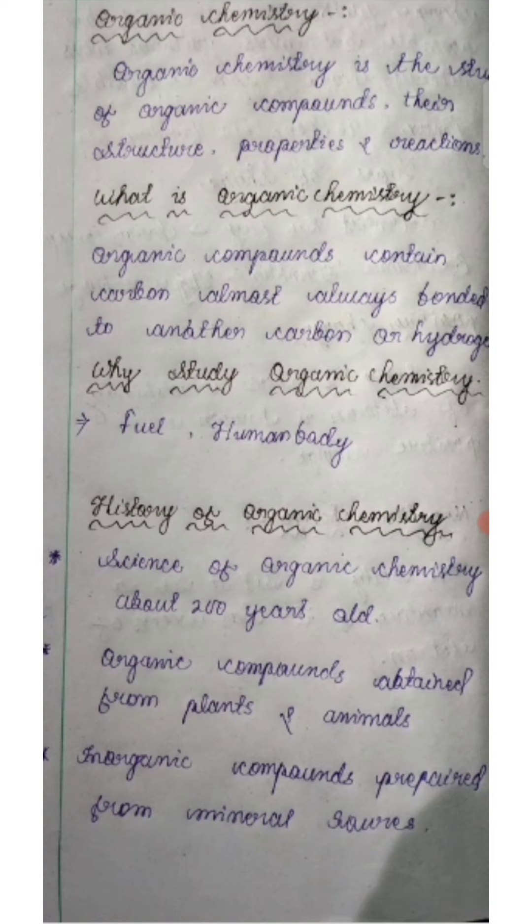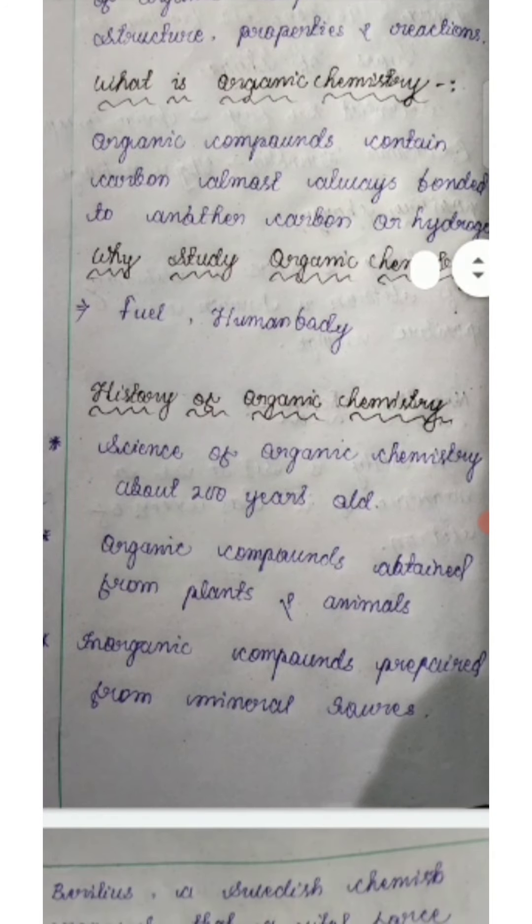Then, history of organic chemistry. Science of organic chemistry about 200 years old. Organic compounds obtained from plants and animals. Inorganic compounds prepared from mineral sources.